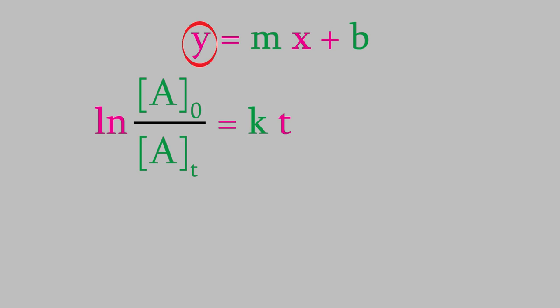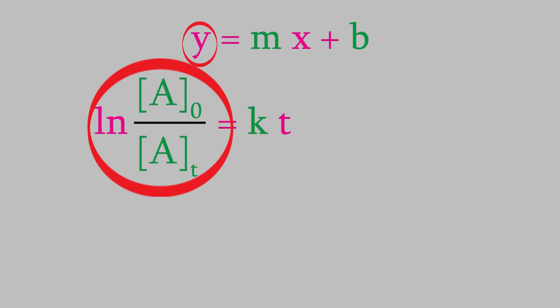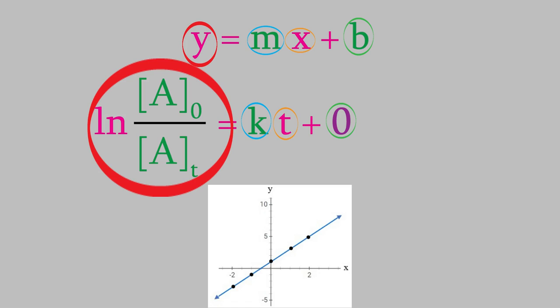Instead of y, the left side of the equation has the logarithm of a0 over at. On the right side, we have k, which is a constant just like m. And we have t instead of x. The equation for a straight line also ends with b, and we can make our first order equation look more like it if we imagine there's a plus zero at the end. So the first order equation really is similar to the equation for a straight line, y equals mx plus b, where m is the slope and b is the y-intercept.